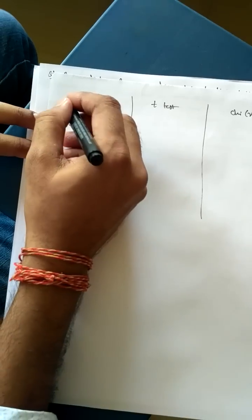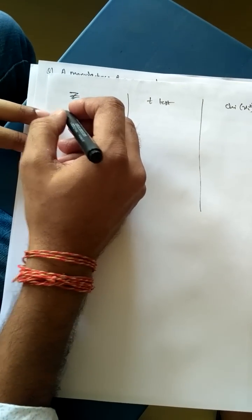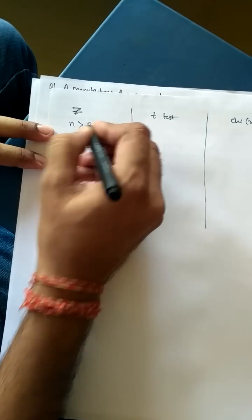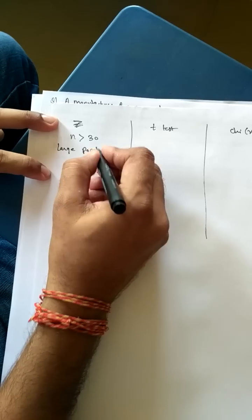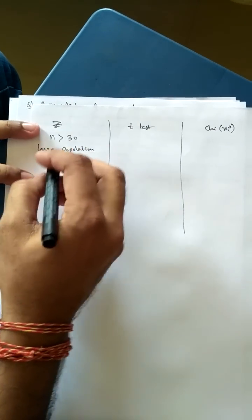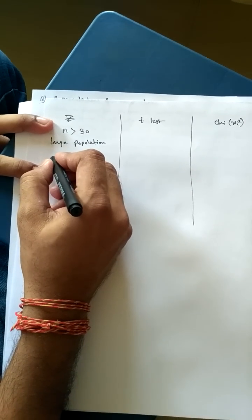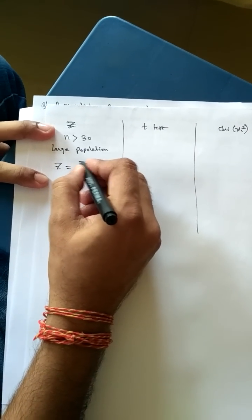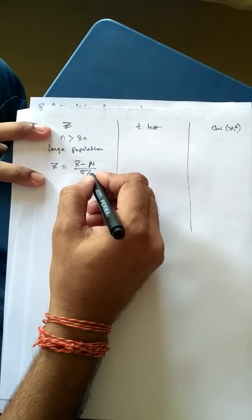Now in Z test, we have to look at the sample size. If n is greater than 30, we call it a large population, and for large population the Z test statistic formula is given by Z equals x-bar minus mu, divided by sigma by root n.